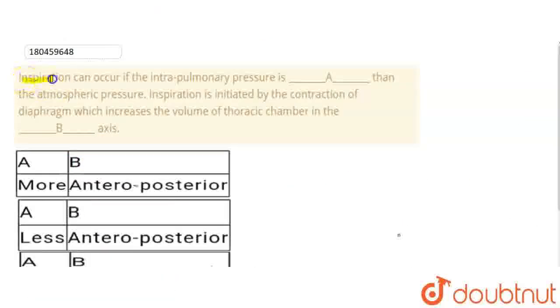The question is: inspiration can occur if the intra-pulmonary pressure is blank A, then the atmospheric pressure. Inspiration is initiated by the contraction of diaphragm which increases the volume of thoracic chamber in the B-axis.